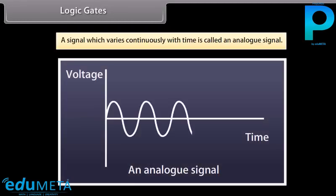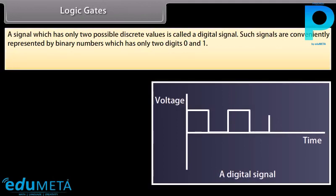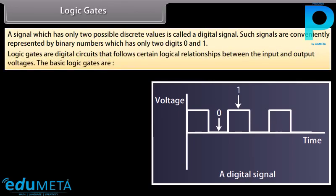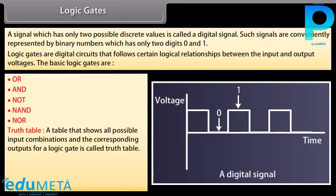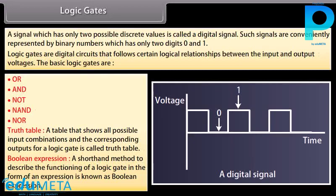A signal which varies continuously with time is called an analog signal. A signal which has only two possible discrete values is called a digital signal. Such signals are represented by binary numbers with only two digits, 0 and 1. Logic gates are digital circuits that follow certain logical relationships between input and output voltages. The basic logic gates are OR, AND, NOT, NAND, and NOR. A truth table shows all possible input combinations and corresponding outputs for a logic gate. A Boolean expression is a shorthand method to describe the functioning of a logic gate.